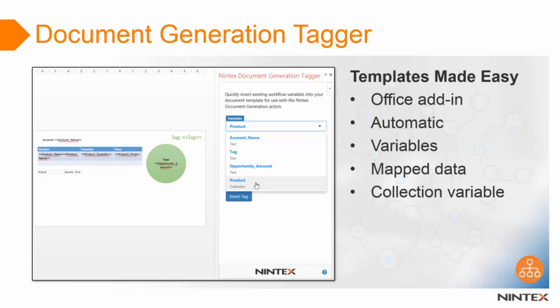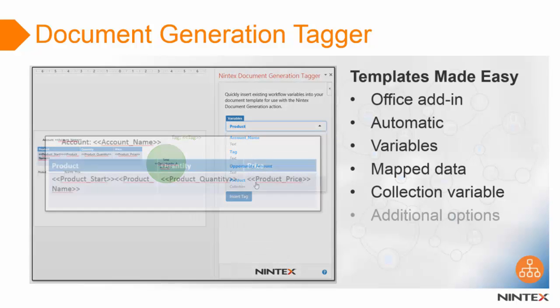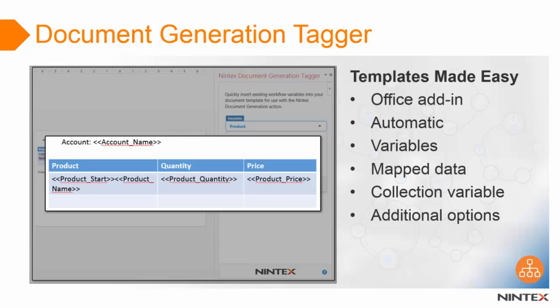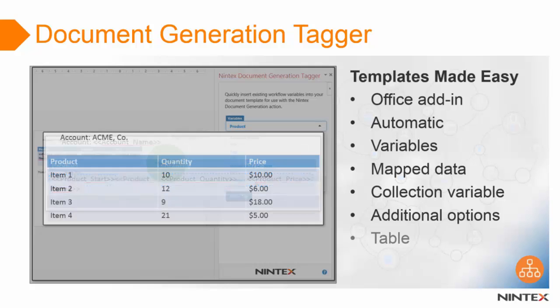In the example shown we are using a collection variable, which you can use to add a table in the document. When you select a collection variable you'll have a new set of options displayed where you can specify the start of the table and choose the data associated with the set of values you'd like to display. When the workflow runs, the document will be populated with a new row for each item in the collection, creating a table with all of your data displayed.